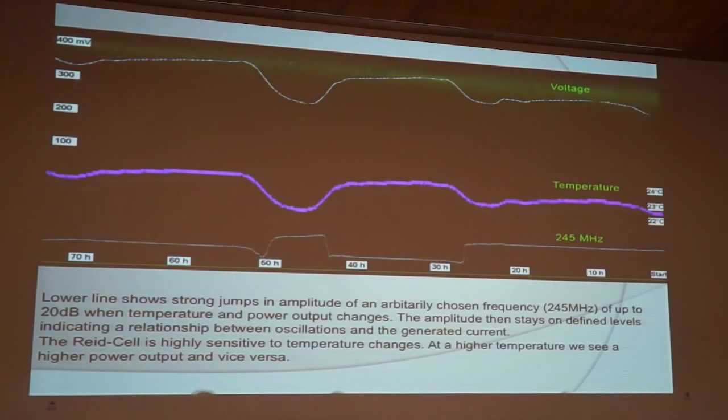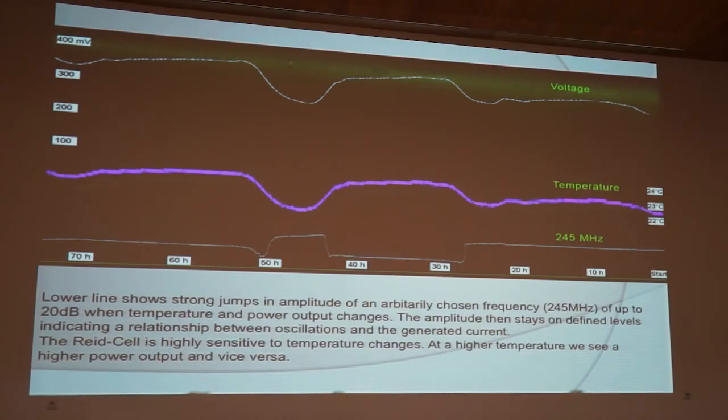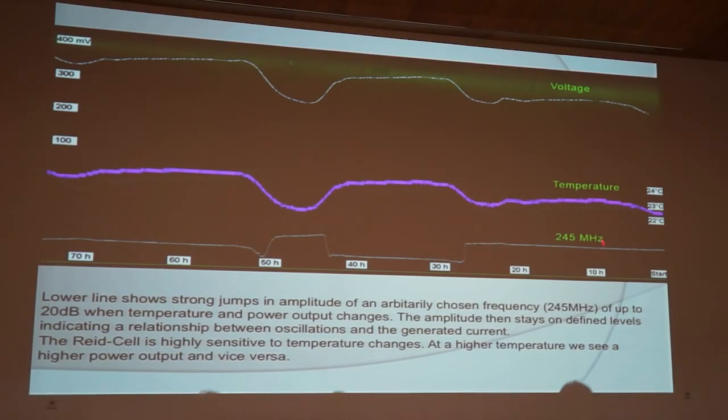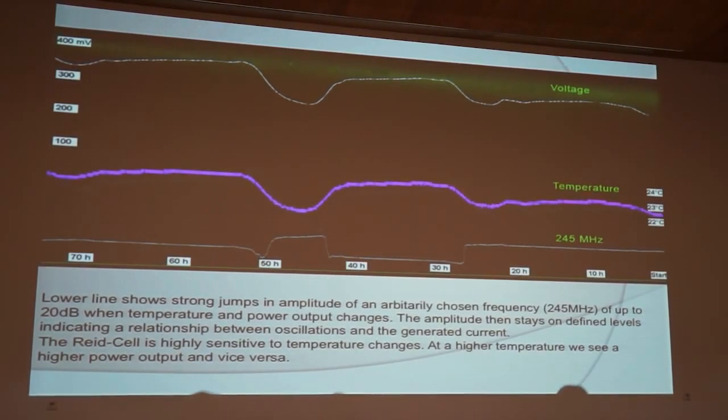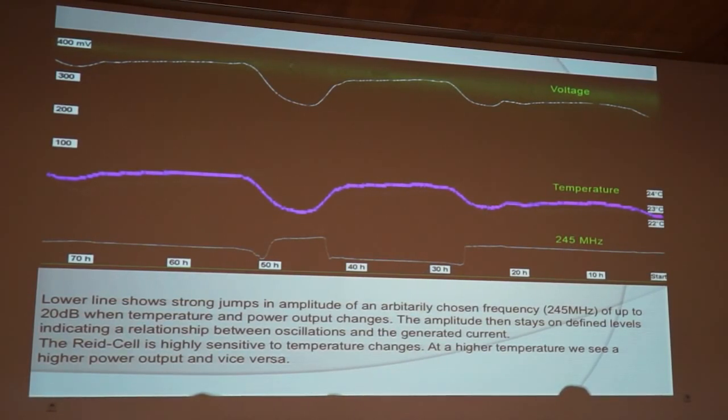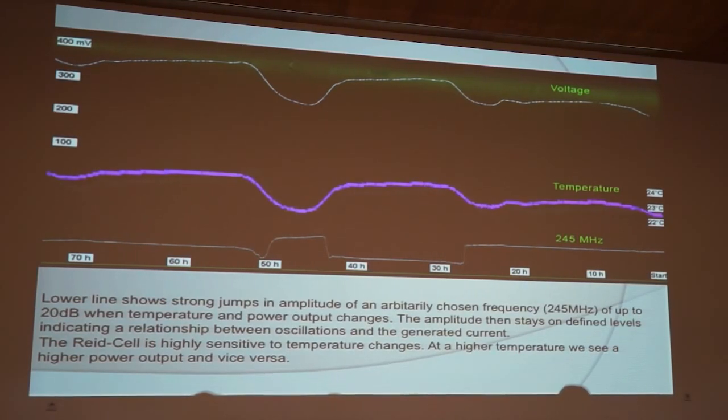Okay, here we are looking at one aspect of the broadband radio signal that comes from the silicate. Up here we have the voltage of the cell being under load on the resistor and here's the temperature in the room going up and down a little bit and as you can see very nicely the voltage curve follows the temperature curve which is showing the temperature dependence of the cell. And from the broadband radio signal we took out a narrow band signal at 245 megahertz and here we are showing only the amplitude of the signal not the frequency. The lower line shows strong jumps in amplitude of an arbitrarily chosen frequency at 245 megahertz of up to 20 decibel when temperature and power output changes. The amplitude then stays on defined levels indicating a relationship between oscillations and the generated current. The read cell is highly sensitive to temperature changes at a higher temperature we see a higher power output and vice versa.